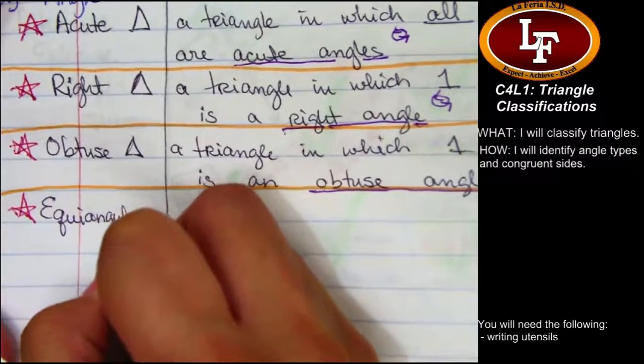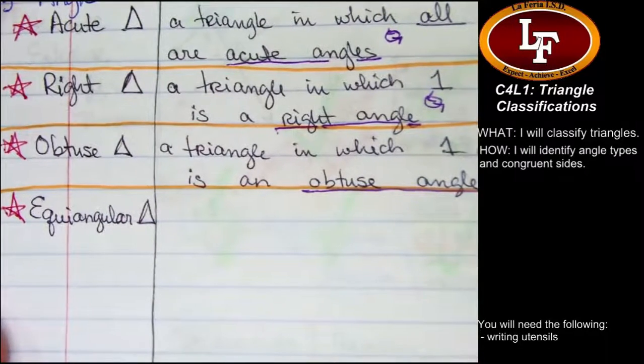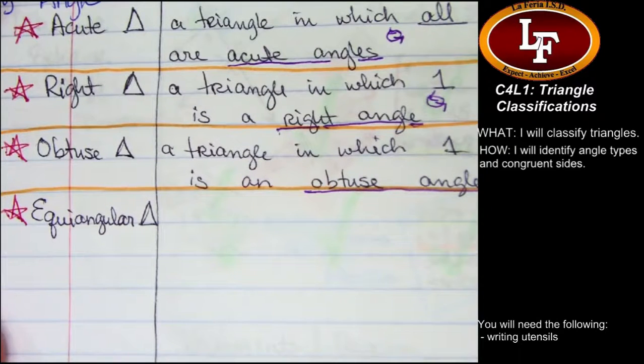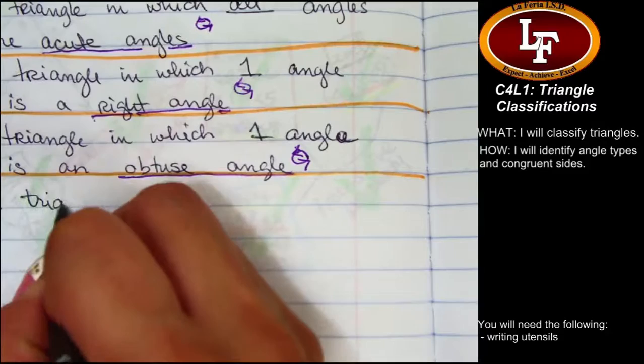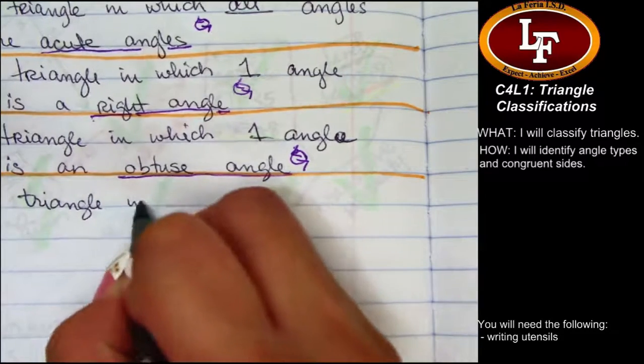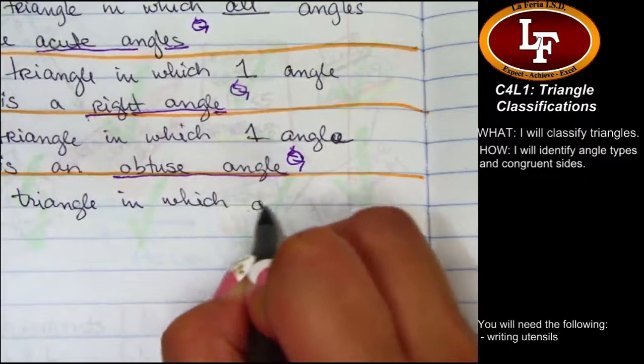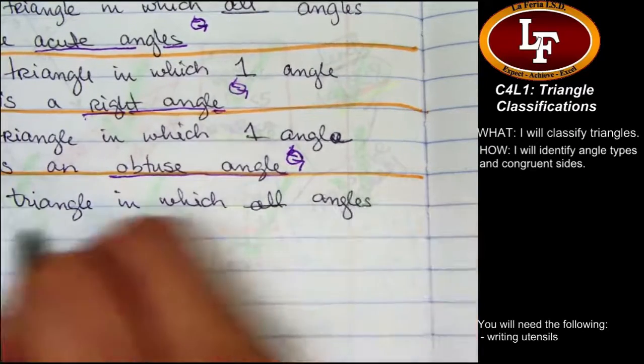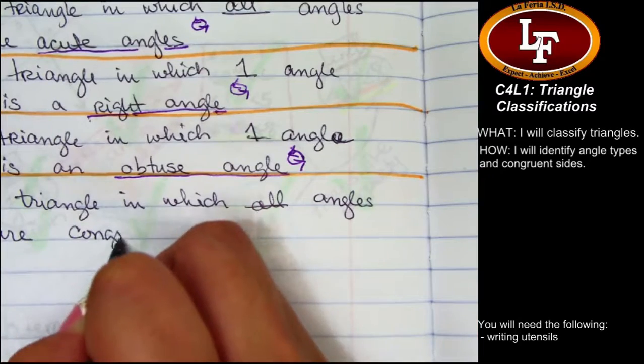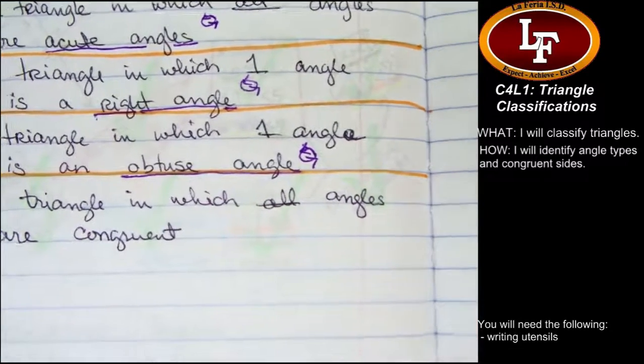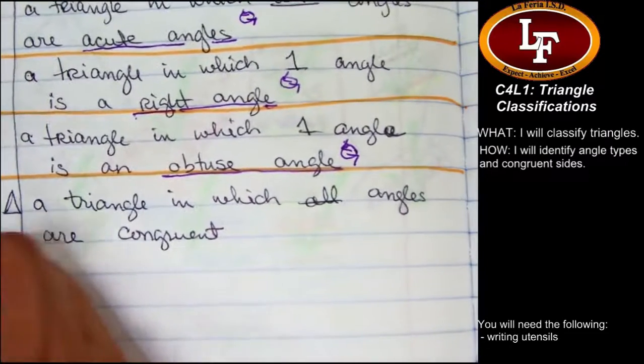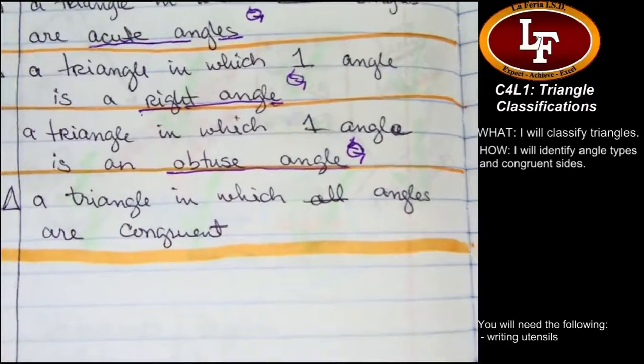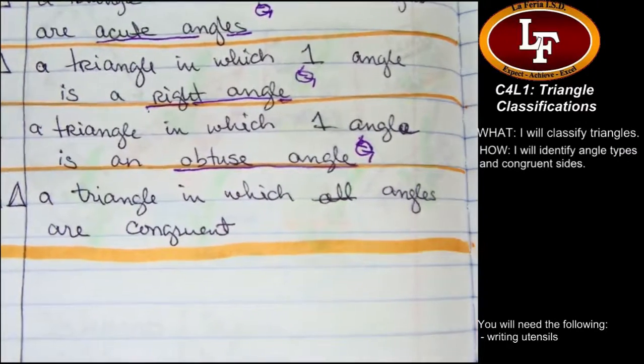The next triangle type is the equiangular triangle. This triangle is called equiangular. An equiangular triangle is a triangle in which all angles are congruent. All right.